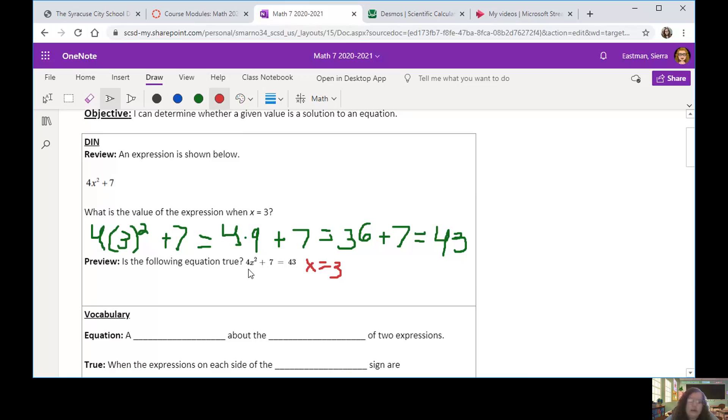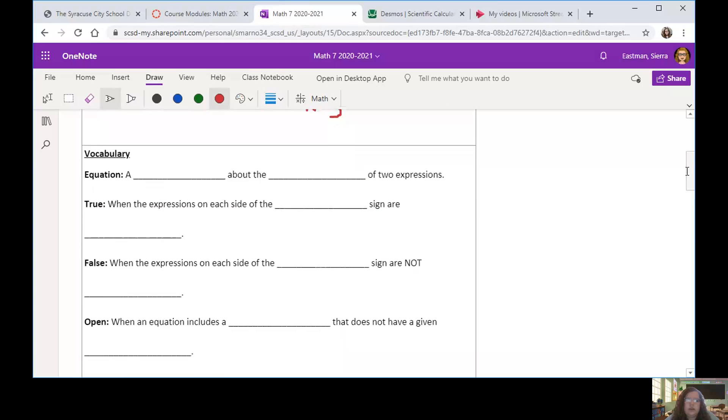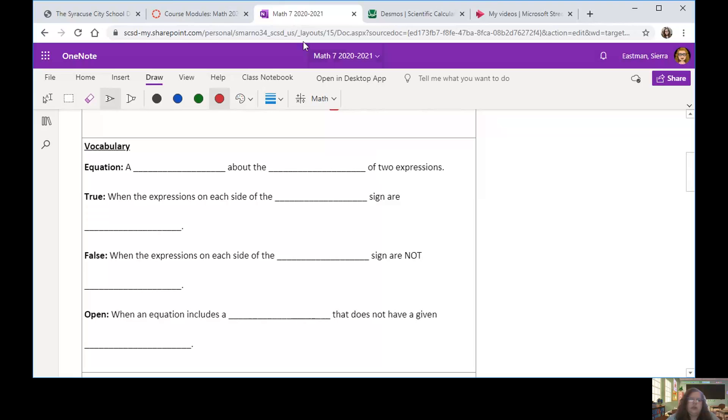If they give you that value, we can say yes. If they do not give you a value for the variable, we can't say yes or no. We're not sure what that solution will be. So let's look at some vocabulary here and a couple more practice questions for our notes and make sure everything is super clear.